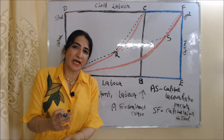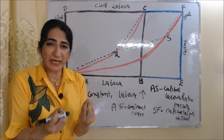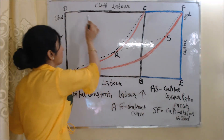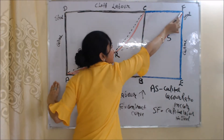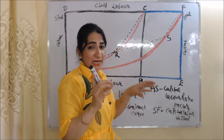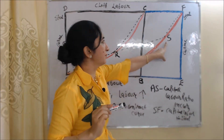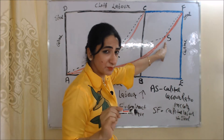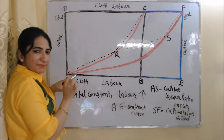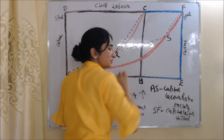Now suppose supply of capital is constant and only labor supply increases. As labor supply increases, our edge-of-the-box diagram expands from AB to AE and from DC to DF. The BE and CF parts show the increase in labor supply. Our new contract curve is AF, and our new equilibrium point is S. At point S, the AS dotted line represents the capital-labor ratio in production of cloth, and the SF dotted line represents the capital-labor ratio in production of steel.